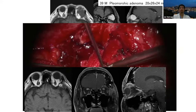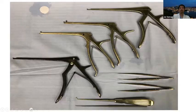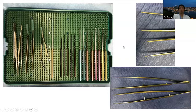I would like to introduce my preferred apparatus: lingula, micro forceps, 1 mm Kerrison, and various spatulas. Another case is a 41-year-old man with angioma, post-trauma — a soccer ball hit five years ago. Preoperatively, he almost lost left visual perception — showing a large central defect in visual function.